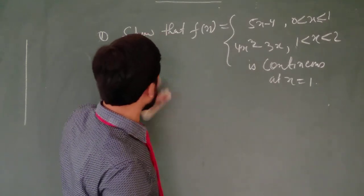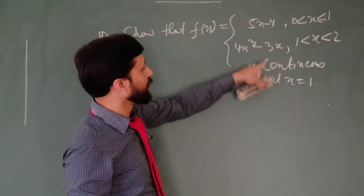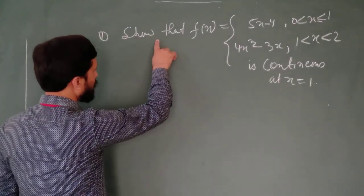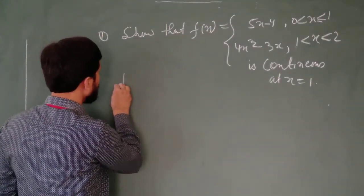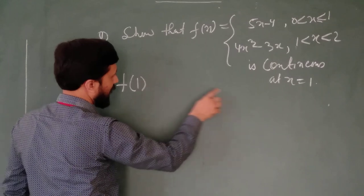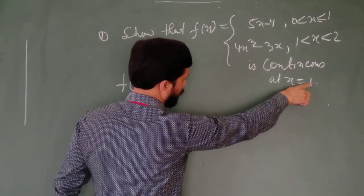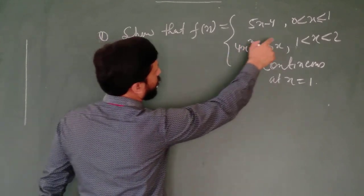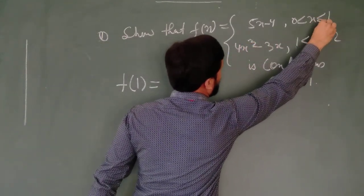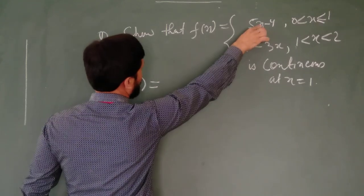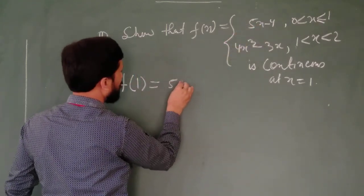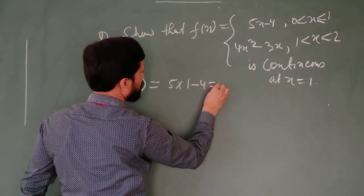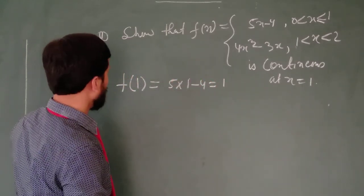You are asked to show the function is continuous at x equal to 1. What will we do? First of all, we will calculate the functional value, that is, value of the function at the given point, at x equal to 1. For x equal to 1, the expression is given. So we will put the value of x, that is, 5 into 1 minus 4, and after solving, we are getting 1.